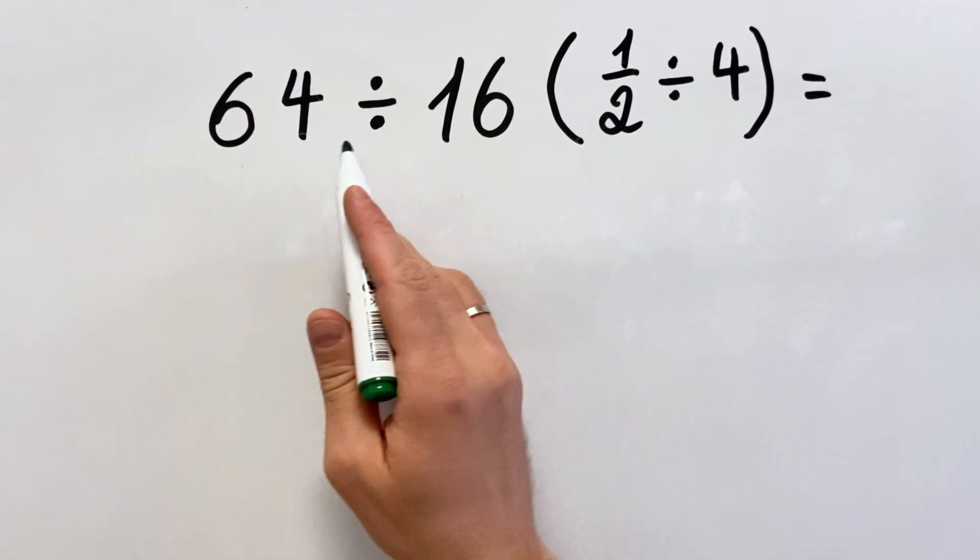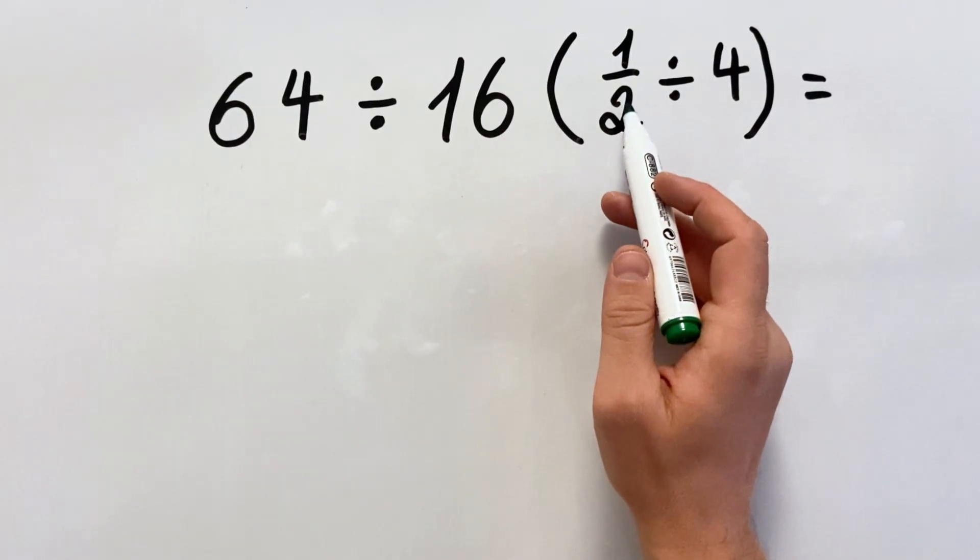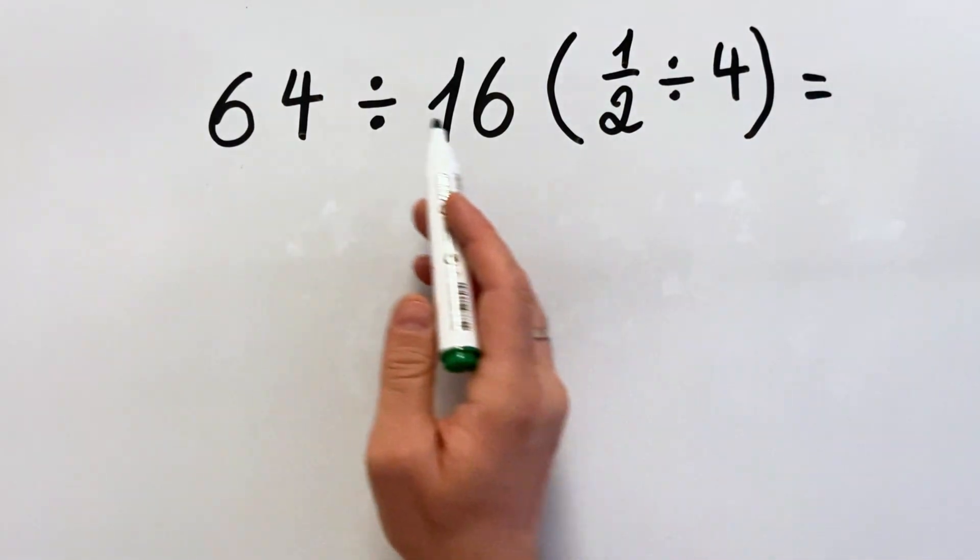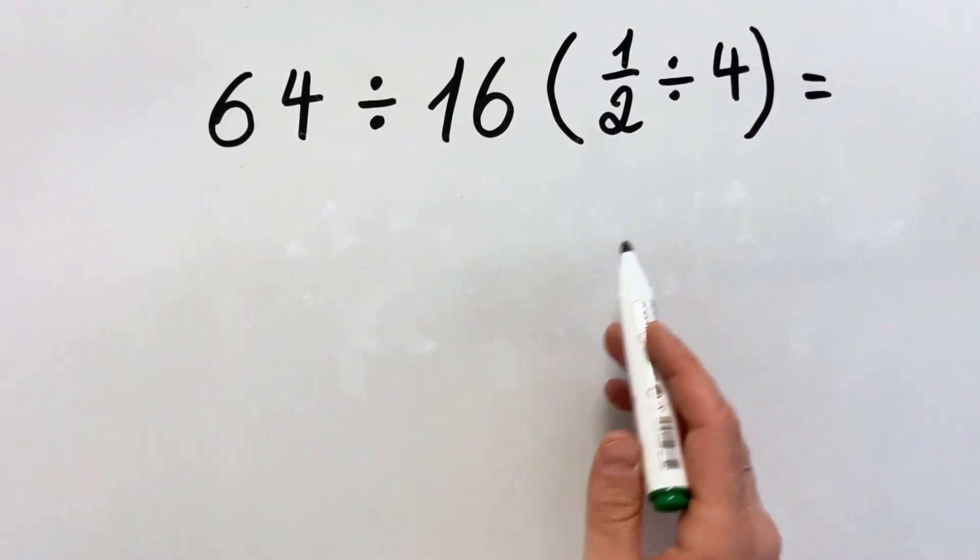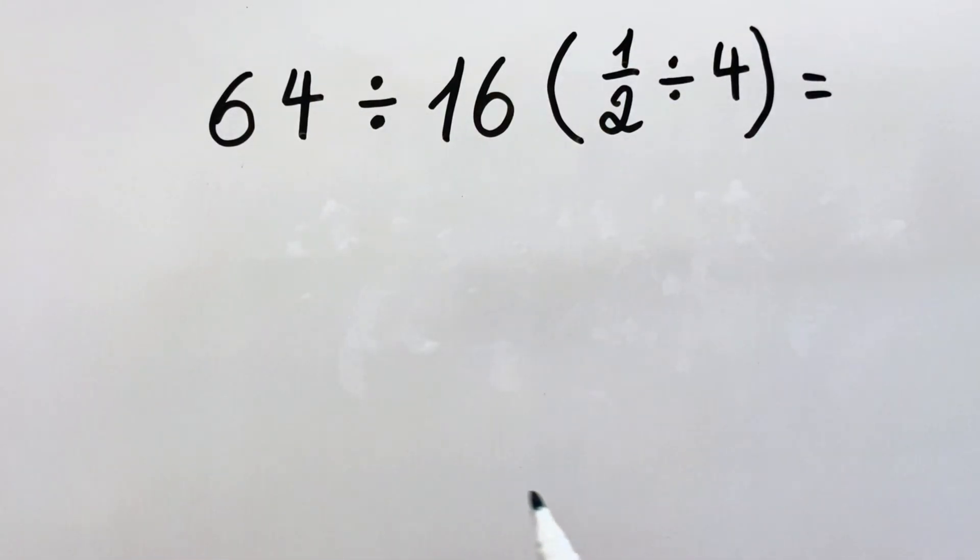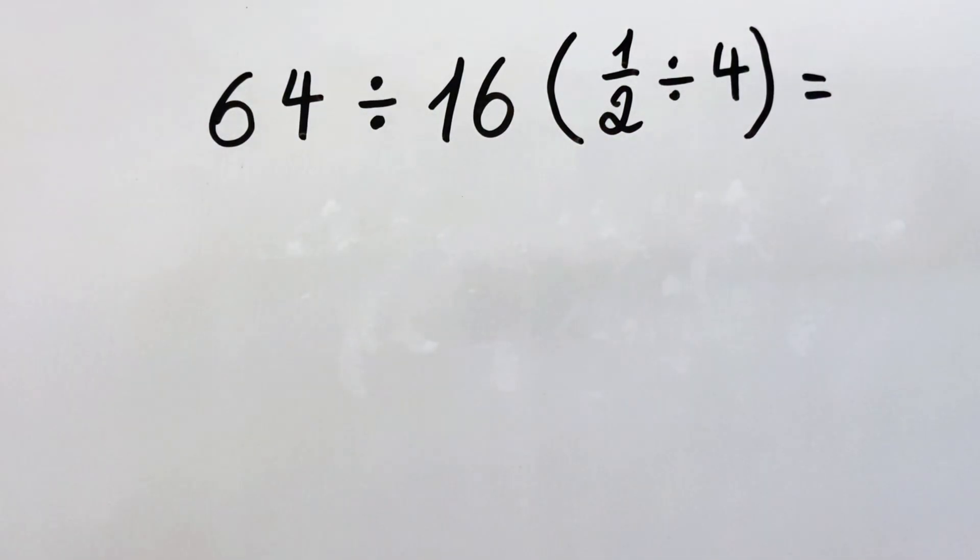Hello everyone. 64 divided by 16, next to 1 over 2 divided by 4. At first this sounds a bit complicated because we have the fraction, the division, and multiplication. But to solve this perfectly without any hesitation, one must remember the order of operation rules.